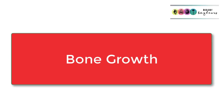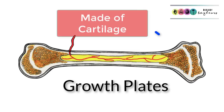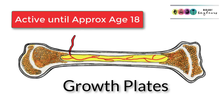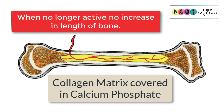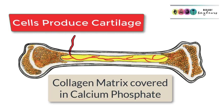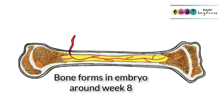So how do bones grow and get longer? Bone growth is controlled by special structures known as growth plates, found where the epiphyses and the diaphysis meet at either end of the bone. They're made of cartilage and their activity determines the length a bone will become. Your bones will get longer until around age 18, after which the growth plates become inactive. Growth plates work by producing cartilage, which then gets covered by a collagen matrix made by the osteoblasts, and this collagen matrix then gets covered in calcium phosphate to form hard bone. Bone formation generally begins around week 8 in embryo development.